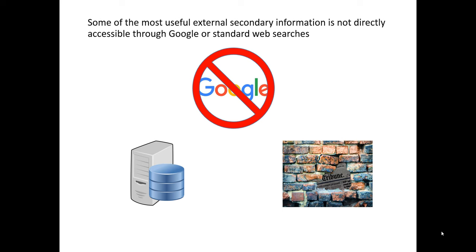Secondly, a lot of the useful information we want access to is hidden behind paywalls. Trade associations, for example, often collect useful information to marketers, but hide it behind a paywall that you have to subscribe to or pay for the report. Luckily, in many cases our academic libraries also aggregate the same types of information.